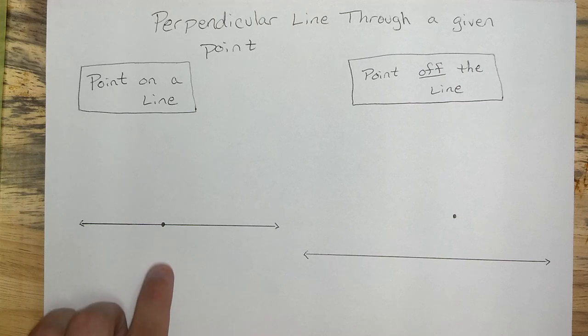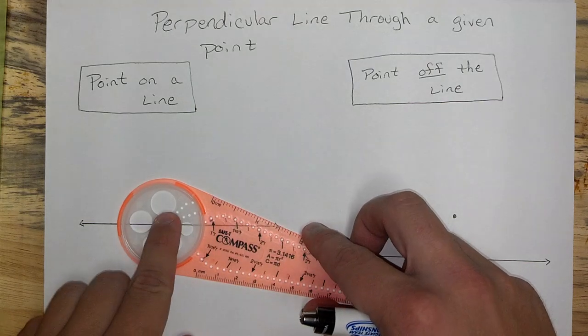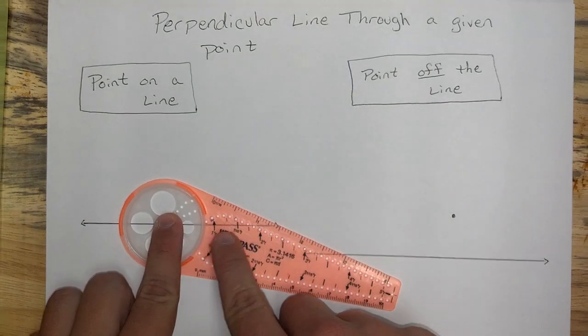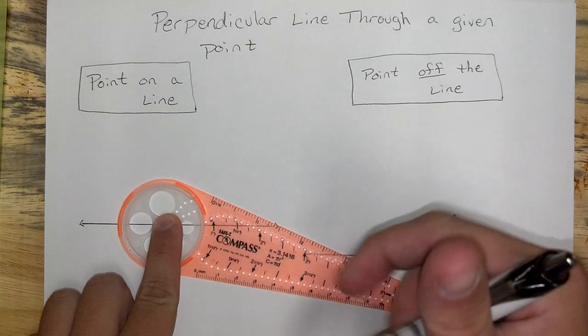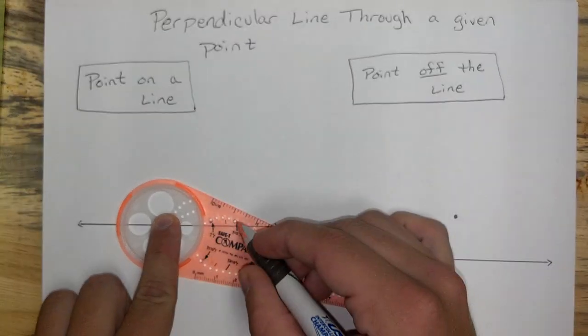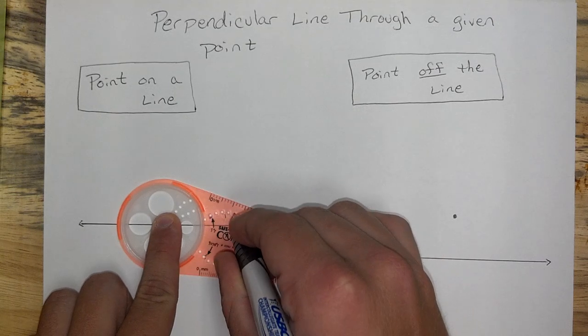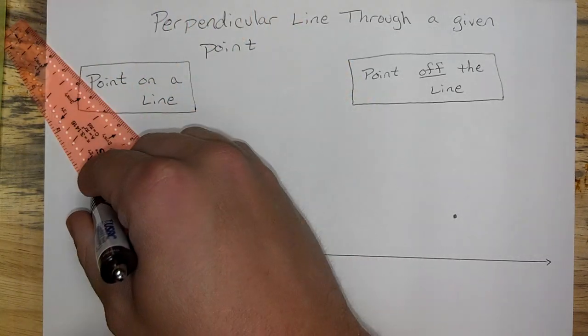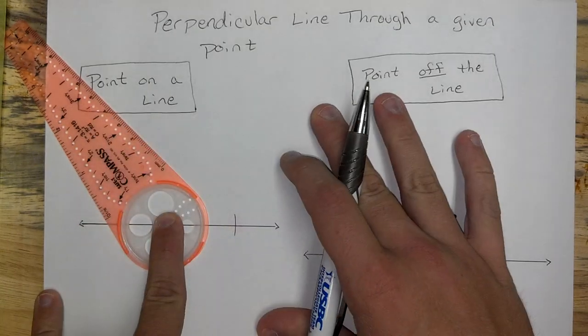So, using our point here, we can create an endpoint. If I come over here on my compass, and let's say I pick a point right here at one and a half. If I mark my line here, and then come to the other side, and mark my line as well.